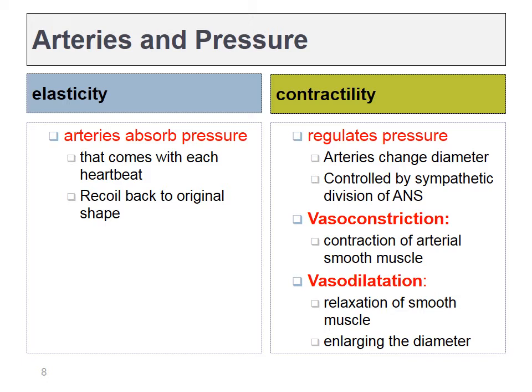Arteries have two important properties: elasticity and contractility. Elasticity means that as we pump blood into our arteries, they expand during systole, then snap back to their original size during diastole. Contractility means we can further regulate pressure inside the arteries with smooth muscle contraction. If I contract those smooth muscles, we call it vasoconstriction, which tends to increase blood pressure. Vasodilation is the relaxation of the smooth muscle tissue, and this tends to lower blood pressure.